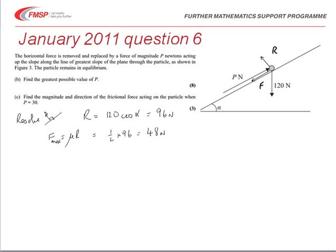Now the greatest possible value of P means that the frictional force must be acting against the possible motion. It must be on the point of moving up the slope, so I've indicated on the diagram that the force F is acting down the slope and P is acting up. Resolving now along the slope in an upward direction, we have that the maximum value of P minus F max minus also the weight component 120 sine alpha is equal to zero.